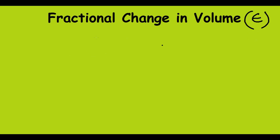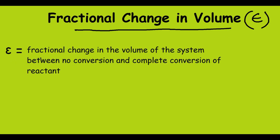While studying chemical reaction engineering, you might have noticed the symbol epsilon, used to denote fractional change in volume. This is mostly encountered while dealing with gas phase reactions. In this video, I will show how you can calculate epsilon. Epsilon equals the fractional change in the volume of the system between no conversion and complete conversion of the reactant.